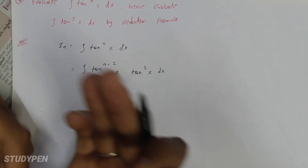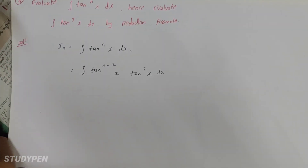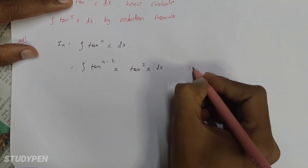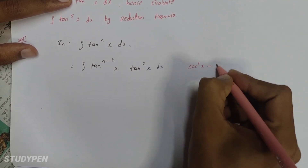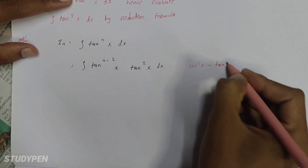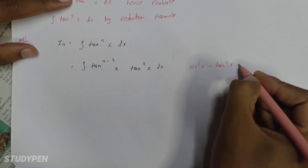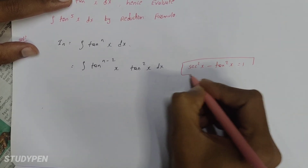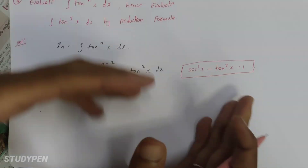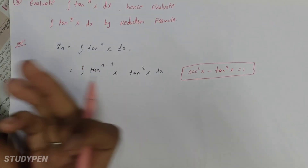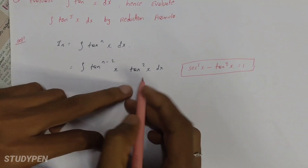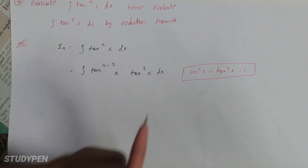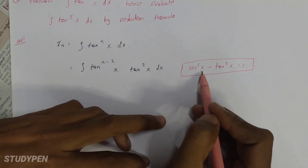So tan power of nx dx comes out. But we pull out n-2, and here we have a formula for tan: sec square x minus 1, sorry minus, tan square x is equal to 1. So this formula is very easy — sec square x minus 1.